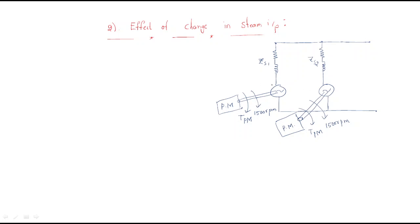Here we have two alternators: alternator one and alternator two. Both are running at 1500 rpm. Alternator one has synchronous impedance Zs1 and alternator two has synchronous impedance Zs2. Initially both steam inputs are the same value. Now, if the steam input of one alternator increases...